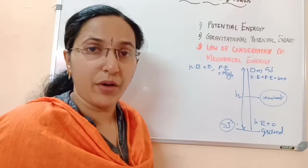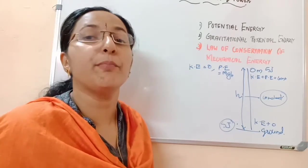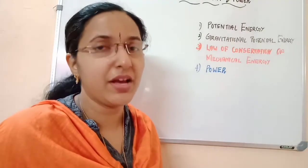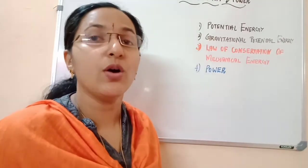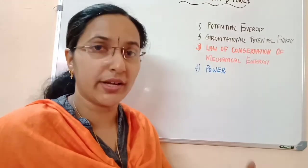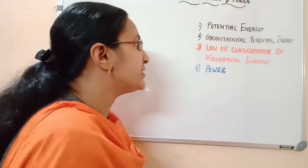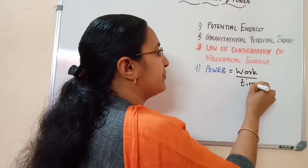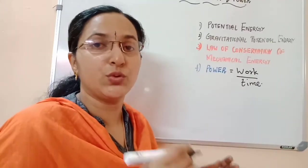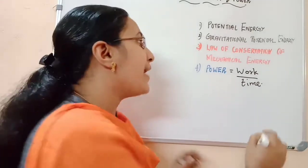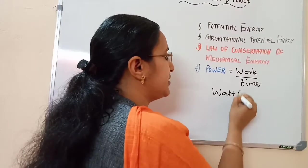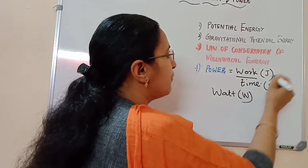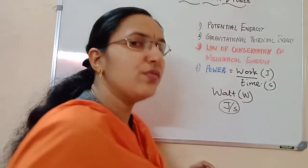Next we can study about mechanical power. How fast we can do work depends upon the power of that body. Mechanical power means how fast the work is done — that is, work done per unit time. If more work is done in a smaller time, it has larger power. Power equals work divided by time taken. If a body or appliance does its work within a short time, it has more power. The unit of power is watt, denoted by W. Another unit is joule per second — unit of work is joule and unit of time is second, giving joule per second.